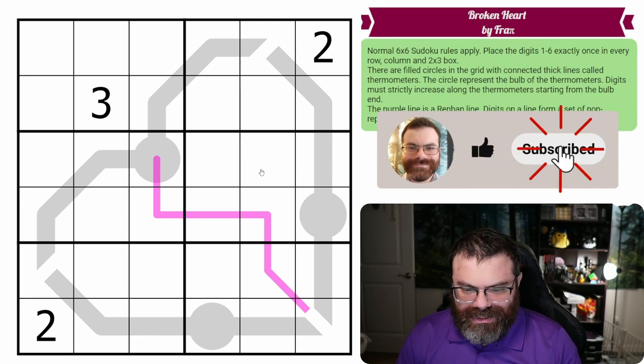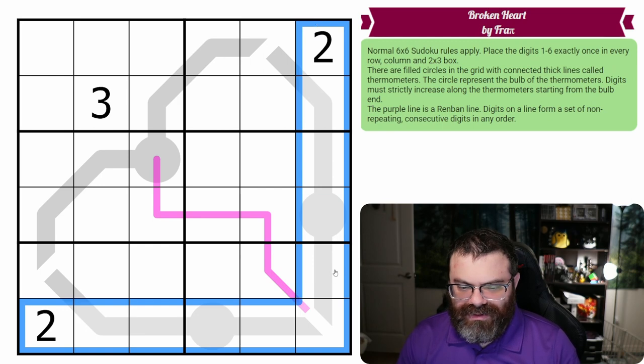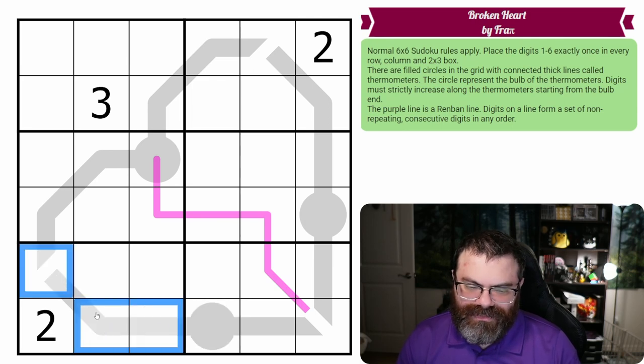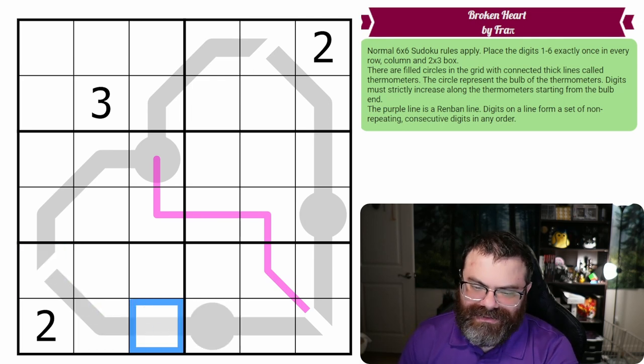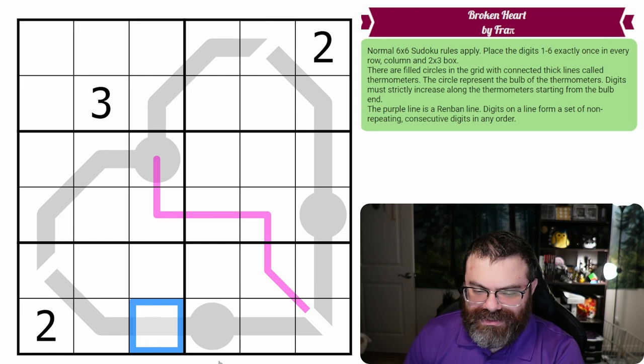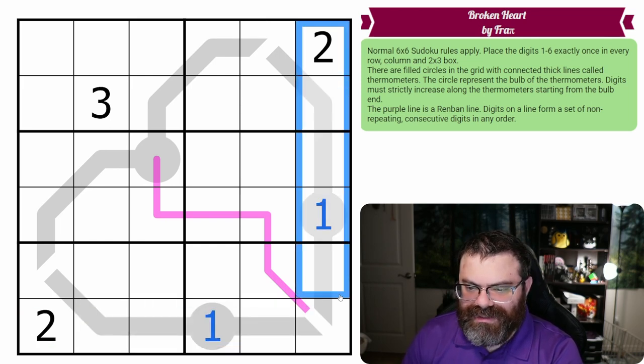Alright, how do we want to get started? Well, I think this row and this column are interesting because we need a one in both of them, and ones can only go in thermo bulbs. They can't go beyond that because if I put a one here, this needs to be smaller than one, and that's not possible. We don't have numbers smaller than one in Sudoku. So the one goes here and the one goes here for this row and for this column.